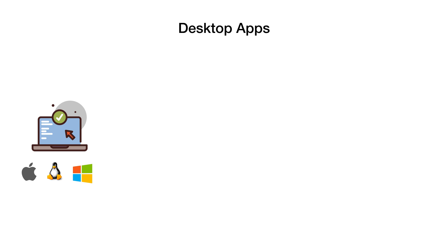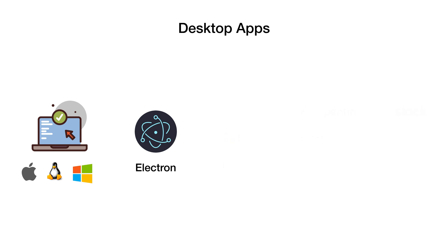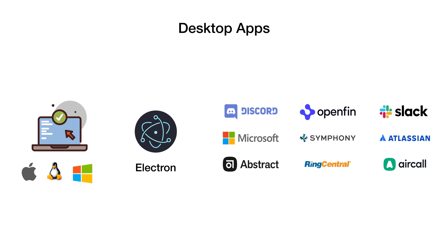Additionally, if you are thinking of creating native desktop applications for Mac, Linux, or Windows, learning JavaScript opens up doors for you here as well. You could leverage Electron, which is an open-source project by GitHub, to create cross-platform desktop applications with JavaScript, HTML, and CSS. In fact, there are a lot of apps created using Electron, and you may already be using them without knowing they were created with Electron.